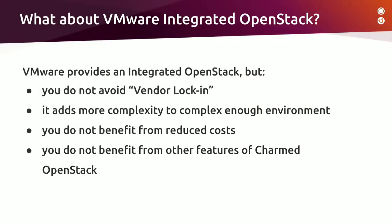At this point, one can ask about VMware Integrated OpenStack. VMware provides an integrated OpenStack that you can run on top of its virtualization infrastructure, but there are some drawbacks. These include vendor lock-in — you are still running on top of VMware. It adds complexity to an already complex environment. You do not benefit from reduced costs, as you still have to pay for VMware licensing, support, subscription, and professional services. And finally, you do not benefit from the other features of Charmed OpenStack.